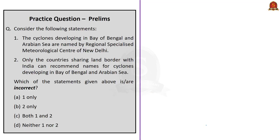Consider this question: Statement 1 — cyclones developing in the Bay of Bengal and Arabian Sea are named by Regional Specialized Meteorological Center of New Delhi. This statement is correct. Statement 2 — only countries sharing a land border with India can recommend names for cyclones developing in the Bay of Bengal and Arabian Sea. This statement is incorrect, because the 13 WMO-ESCAP countries include not only countries sharing a land border with India, but also many others like Maldives, Oman, Sri Lanka, Thailand, Iran, Qatar, Saudi Arabia, UAE and Yemen. So the first statement is correct and the second is incorrect; the correct answer is option B, 2 only.